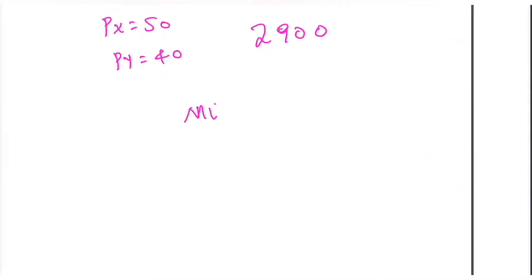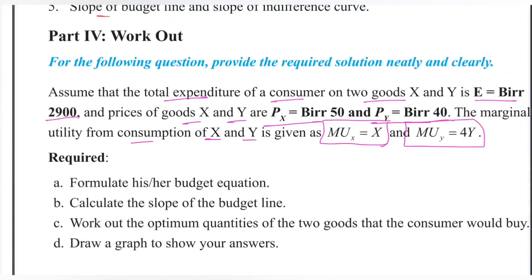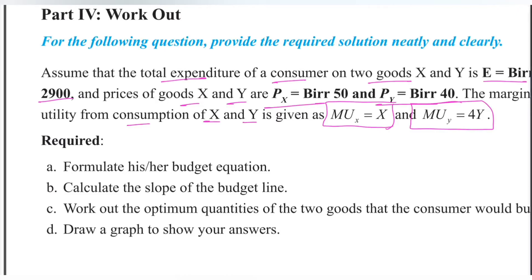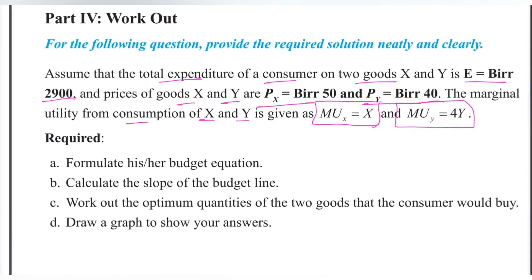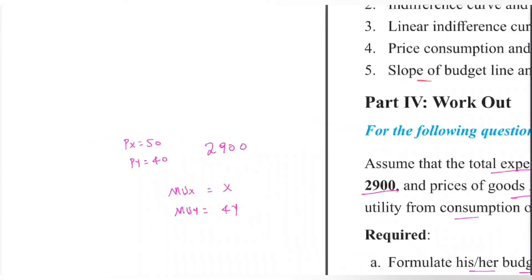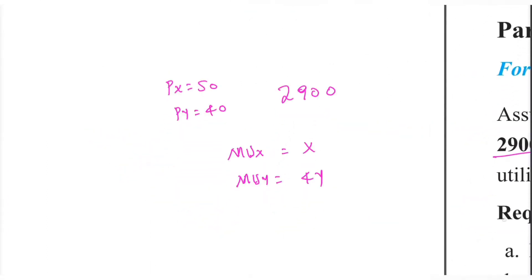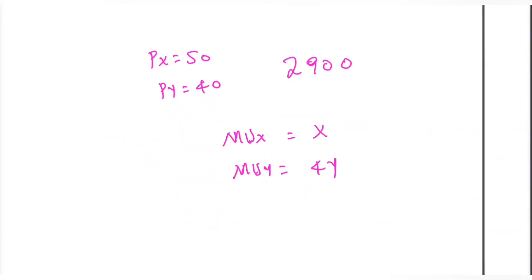Marginal utility of x is equal to marginal utility of y for y. The quantity of x and the price of x are established for the budget framework.